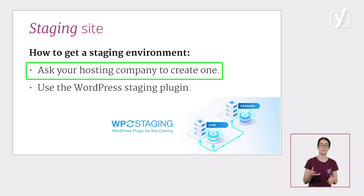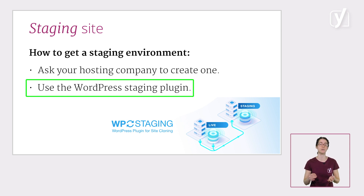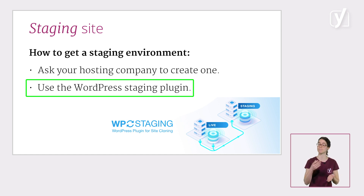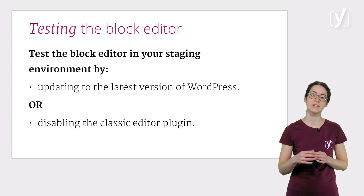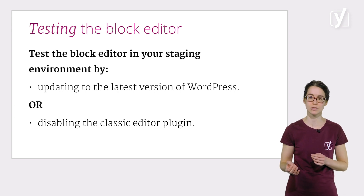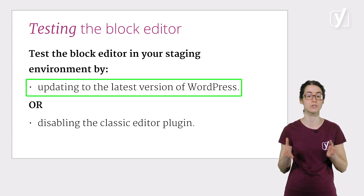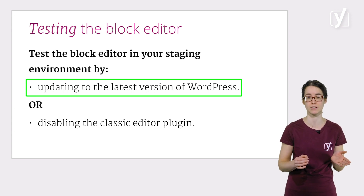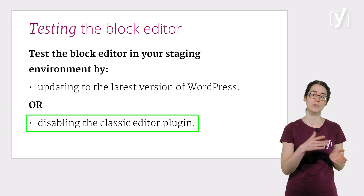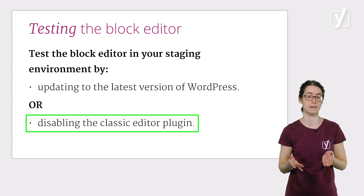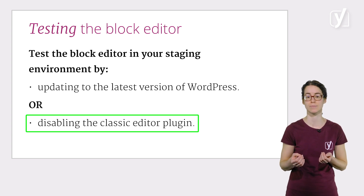And if they can't fix this for you, there's another easy solution. You could use the WordPress staging plugin. This plugin allows you to create a staging site for your website yourself. Once you've got that staging environment sorted, you can update to the latest version of WordPress, which automatically comes with the block editor. Or you can disable the classic editor plugin and see what effect it has on your site.